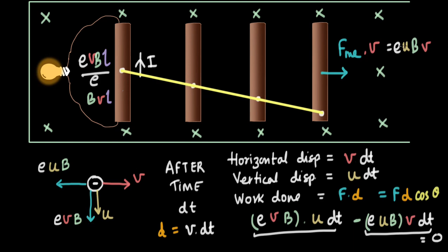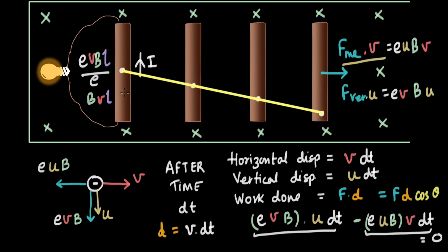Now the power being delivered to the electrons by the vertical component is the vertical force EVB multiplied by velocity U — the velocity along the force — giving EVB·U. Notice that these two powers are exactly the same. That means the vertical component of the magnetic force is taking my macroscopic mechanical power and turning it into microscopic power for the electrons. The electrons leave the lower end, flow through the wire, pass the lamp, and deliver that power to the lamp — and the lamp glows.